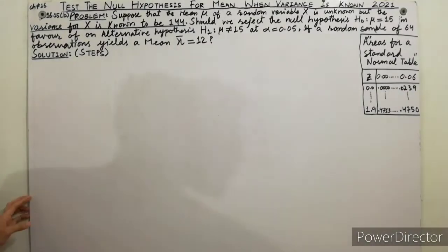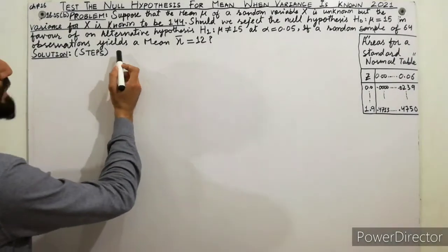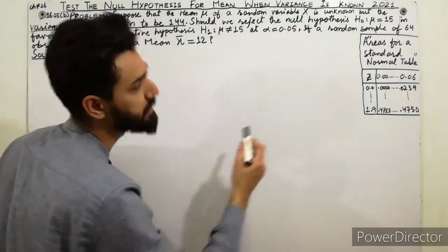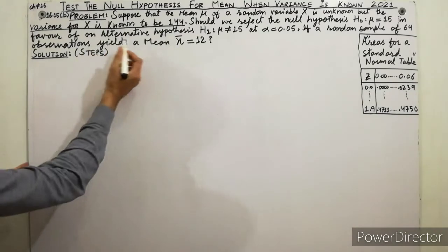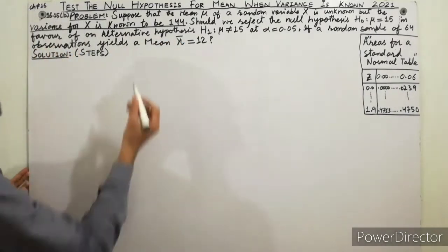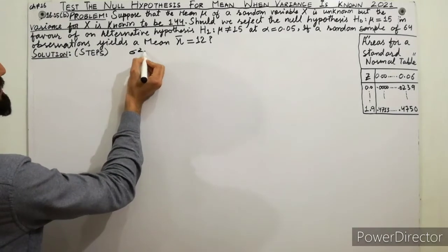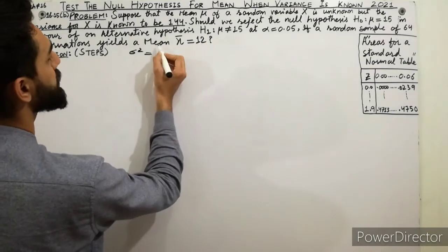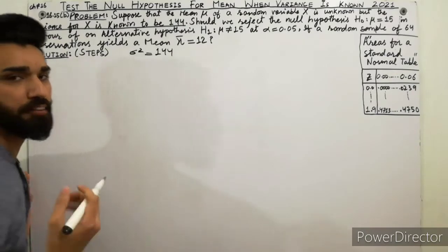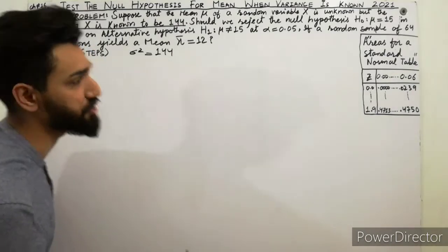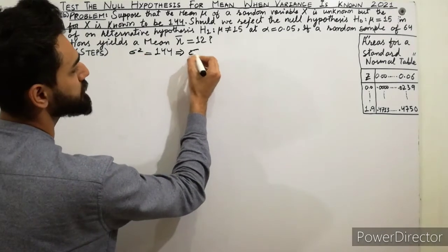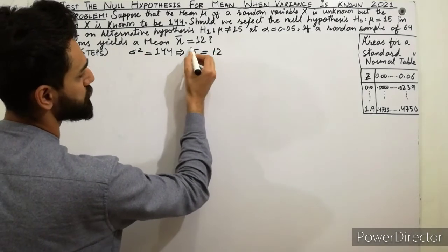The problem is given here. Suppose that the mean mu of a random variable X is unknown, but the variance of X is known. Here the variance sigma-squared is already given as 144. You already know that you need just sigma, the standard deviation, so you can take the square root: sigma is equal to 12, since 12 squared is 144.